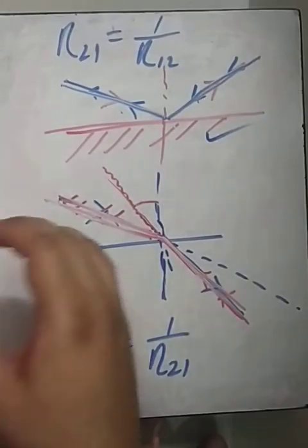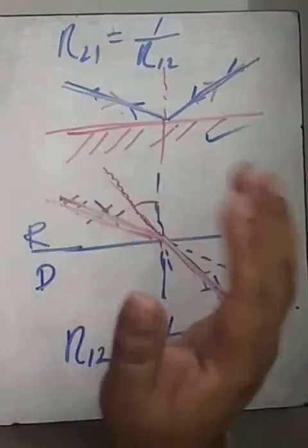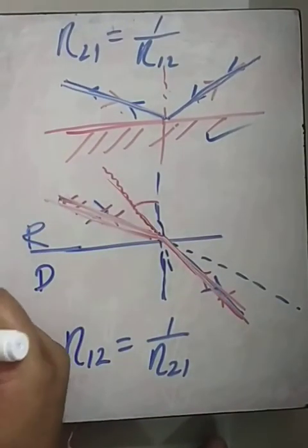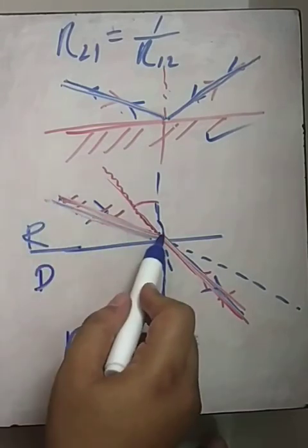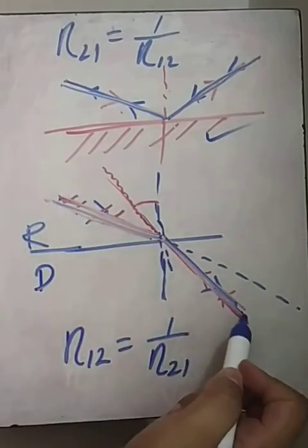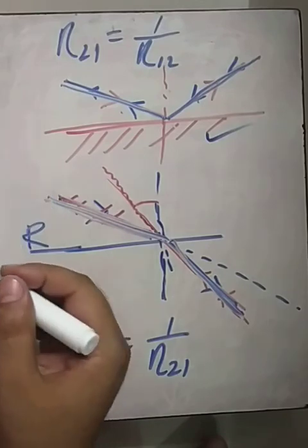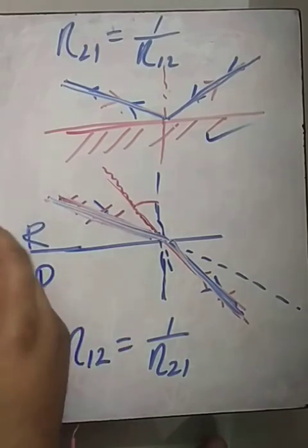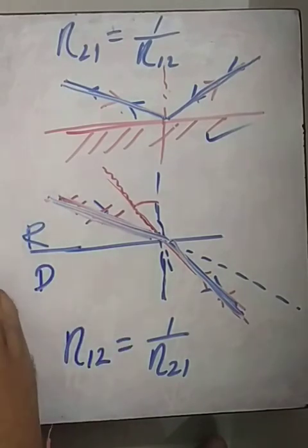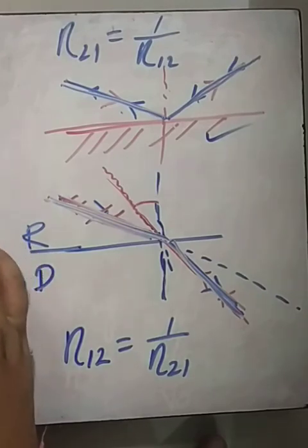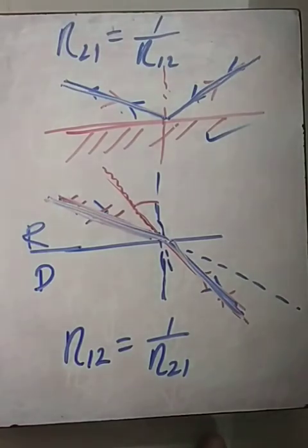This is given in the book, but now you have a much clearer understanding. If this is the incident ray, then this is the refracted ray; and if that becomes the incident ray, then the path reverses as the refracted ray. So we stop the video here — we have covered refractive index, its numeric value, and the related concepts. Thank you very much.